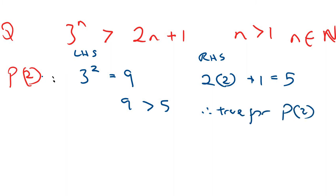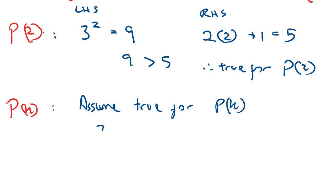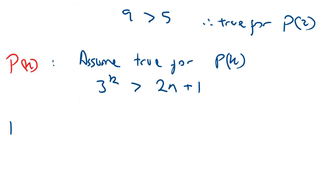The inductive assumption for n = k says: 3 to the power of k is always greater than or equal to 2k + 1. We're now going to test for n = k + 1.